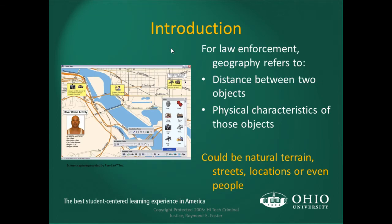We'll also cover the difference between a plain map and geographic information systems, or GIS. For law enforcement, geography refers to the distance between two objects, the physical characteristics of those objects, and some attributes those particular locations may have — such as natural terrain, street locations, and even people.